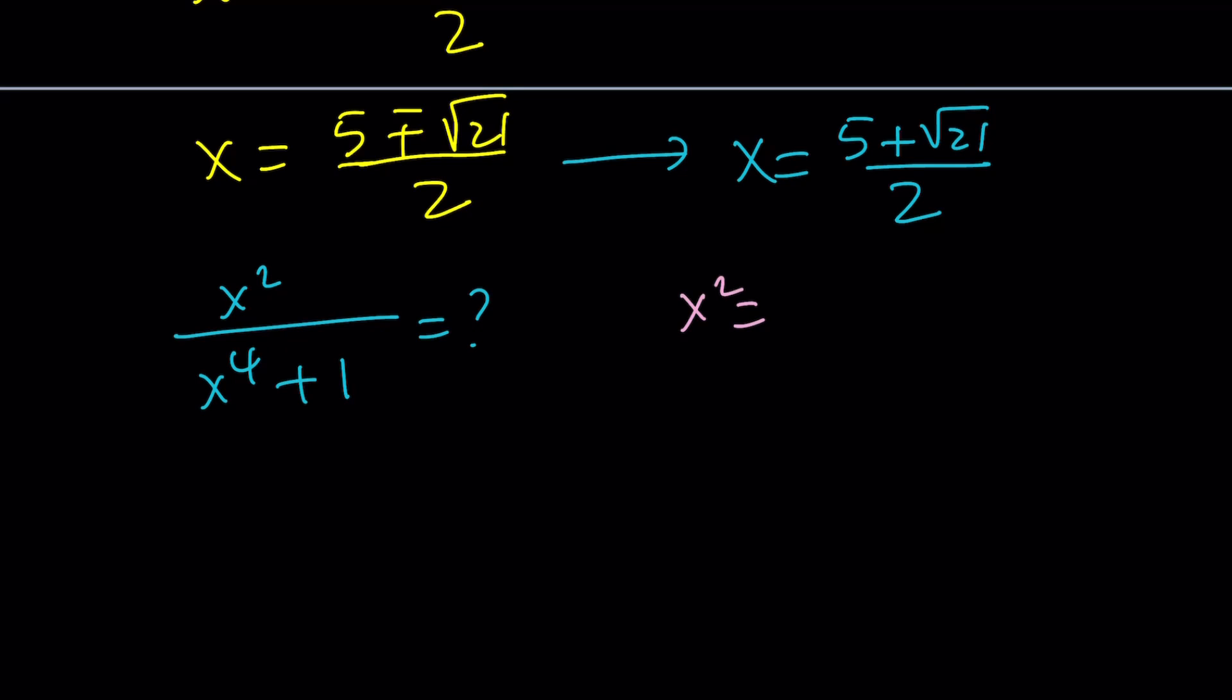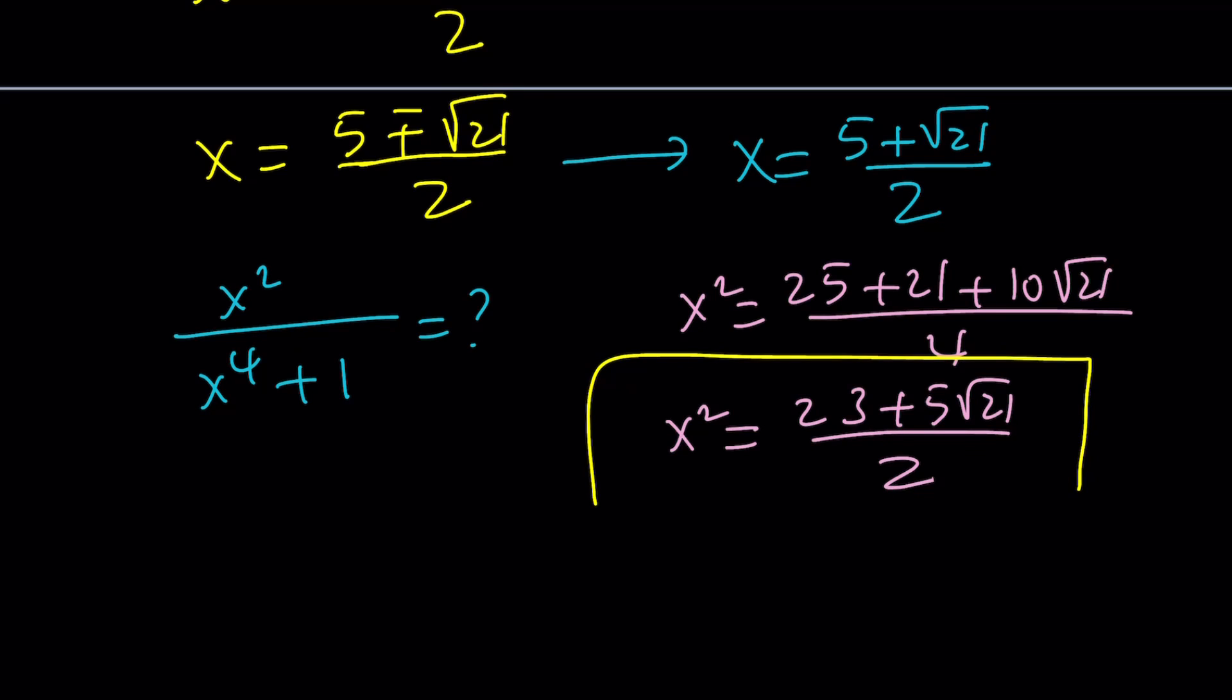So now let's evaluate x squared from here. You're going to square both sides. That's going to give you 25 plus 21 plus 10 root 21, all over 4. Simplify this a little bit. You're going to get 46, and then divide by 2, 23, divide by 2, 5 root 21, and divide by 2. You're going to get 2. So that's x squared in the simplest form. It's a radical.